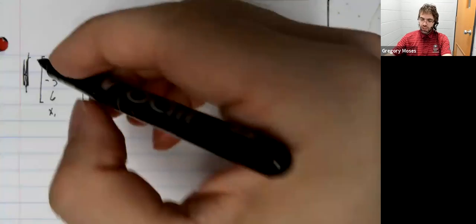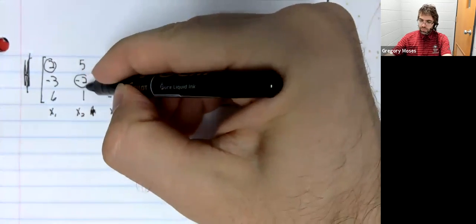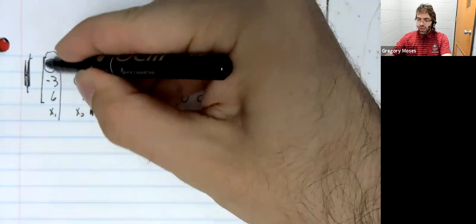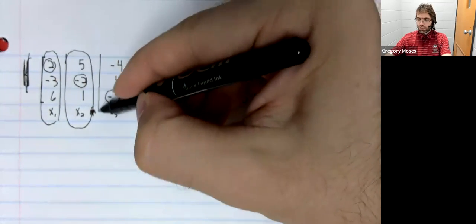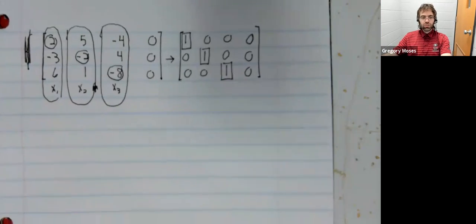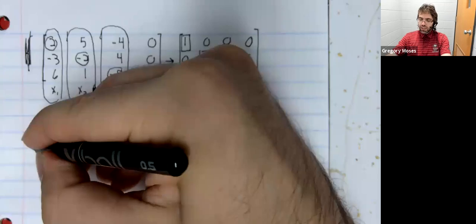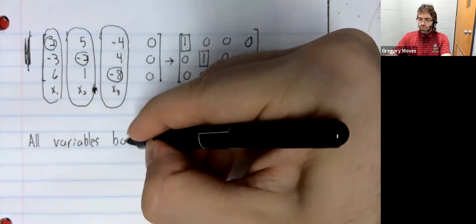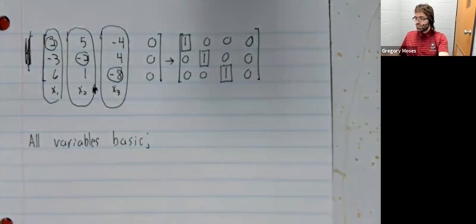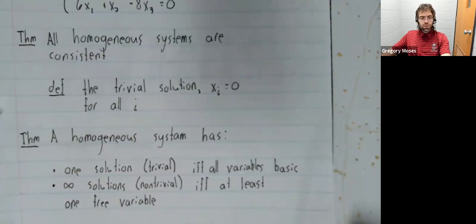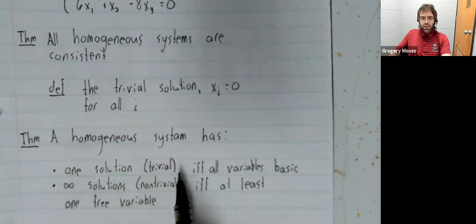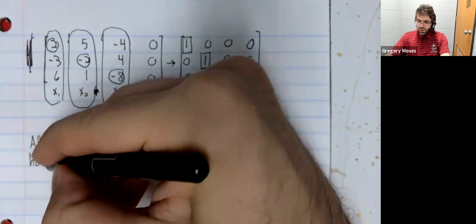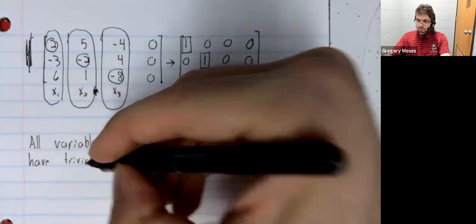And these leading entries are the pivot positions of the matrix. And we see that every variable corresponds to a pivot position. That is to say, that all the variables are basic. And our theorem tells us that we only have one solution. We only have the trivial solution.